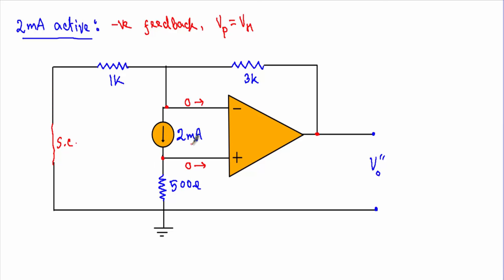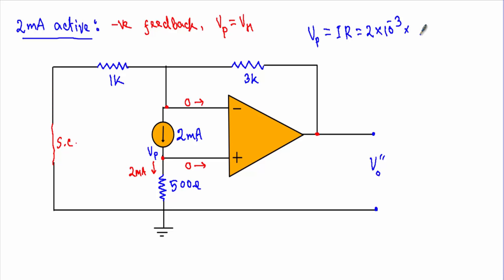Since the current into the non-inverting terminal is 0, the 2 mA current from the current source flows entirely through the 500 Ω resistor to ground. I can calculate VP using Ohm's law: VP equals 2 mA times 500 Ω, which equals 1 volt. Since VP equals VN, VN is also equal to 1 volt.